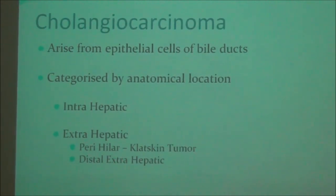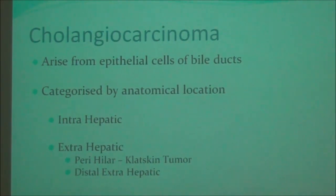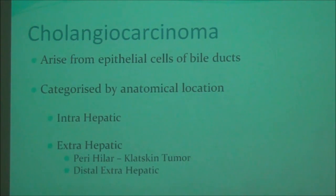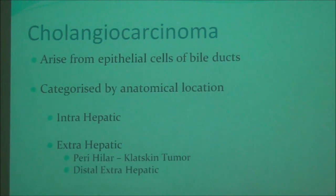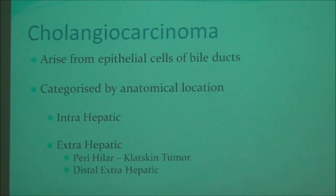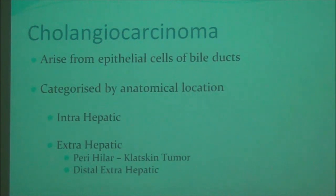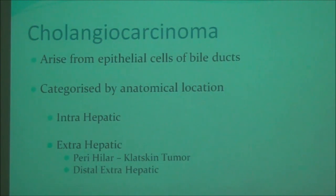The next malignancy to discuss is cholangiocarcinoma. Cholangiocarcinomas arise from epithelial cells in the bile duct called cholangiocytes. They are categorized by their anatomical location — they can be intrahepatic or extrahepatic. Extrahepatic tumors are further divided into perihilar and distal extrahepatic tumors. Perihilar tumors are also called Klatskin tumors.